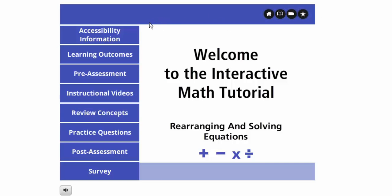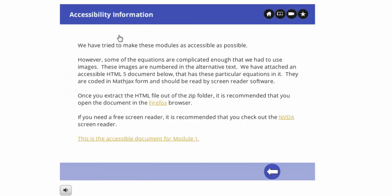Let's start looking at the different parts of the actual module. First, we have accessibility information. If you click this, it'll take us to the accessibility information page. We try to make these modules as accessible as possible, but some of the equations are actually images, so we've attached an HTML5 document that can be read by screen readers.